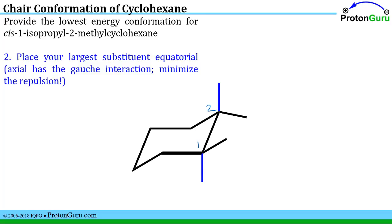Next, no matter what else happens, we want to minimize the repulsion as much as possible if we're looking for the lowest energy, which means the most stable conformation. So we have two substituents we have to place, isopropyl and methyl. The isopropyl group, if you don't remember, looks like that, and the methyl group of course is just a CH3. So isopropyl is much bigger.